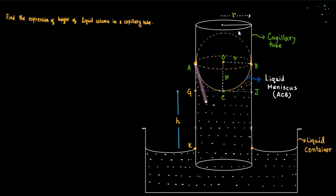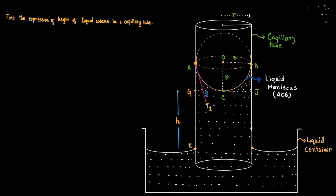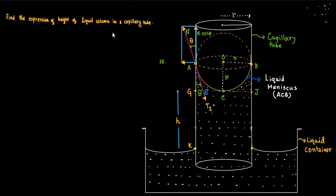Surface tension S acts along the tangent at point A, at an angle theta with the wall of the capillary tube. The reaction of surface tension is N, which acts along AZ at an angle theta with the wall of the capillary tube. N cosθ is the rectangular component acting vertically upward along the wall, and N sinθ is the horizontal component acting perpendicular to the wall.